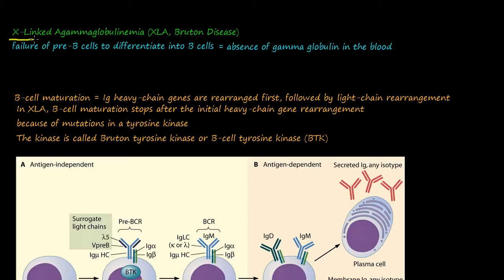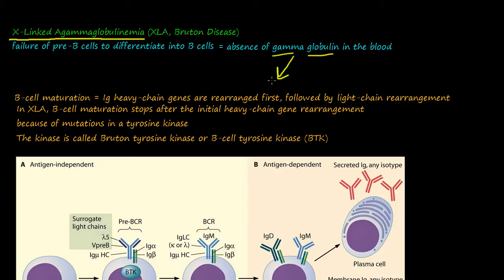What is X-linked agammaglobulinemia, or XLA for short, also known as Bruton's disease? XLA is a failure of pre-B cells to differentiate into B cells and the subsequent absence of gamma globulins in the blood. Gamma globulins include immunoglobulins, or Ig, and we'll talk about that in this video.